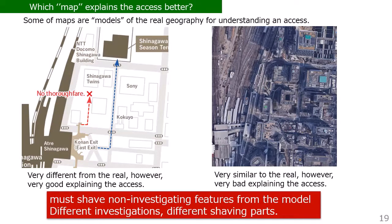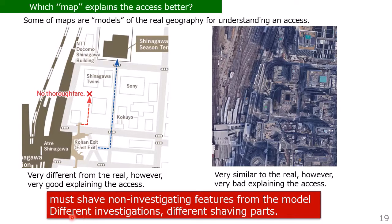Do you think which map explains the access model? Some maps are models of real geography for understanding access. The left-side map is very different from reality, but it is very good at explaining the route from the station to the office. On the other hand, the right-side map is very similar to the real geography, but very bad at explaining the access — you cannot tell how to get from the station to the office. So we must remove non-relevant features from the model. Different investigations require different simplifications, so different investigation purposes lead to different good models.